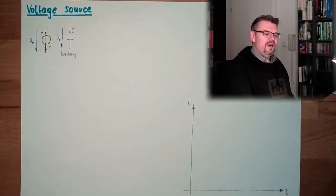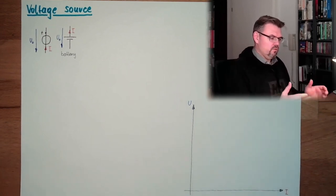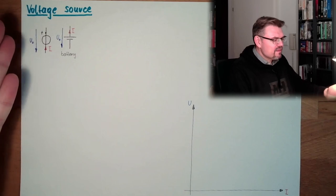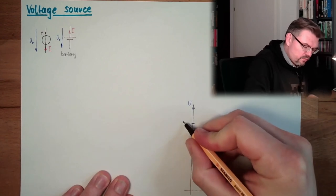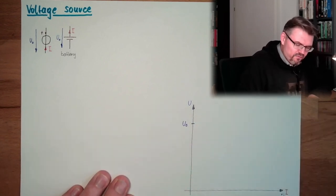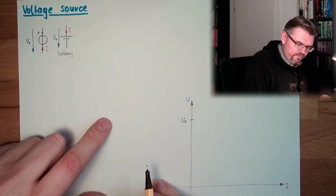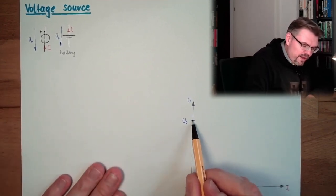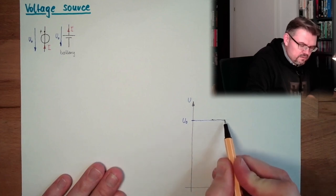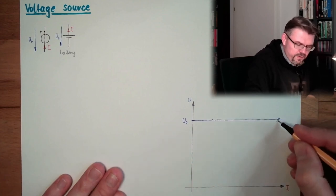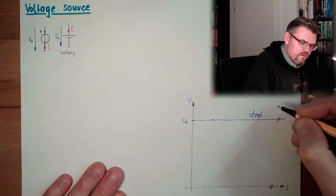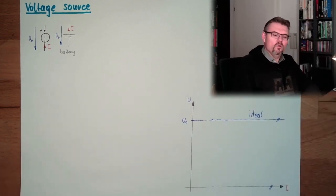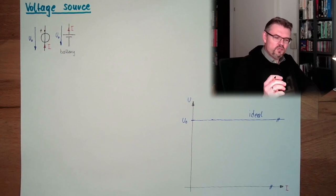I have already mentioned this is an ideal source. What does this mean? What means ideal? Ideal means we have somewhere the source voltage source, U0, and regardless of the current which is running through, there is no dependency on the current. This is an ideal voltage source. Because the voltage is ideally a constant voltage source.